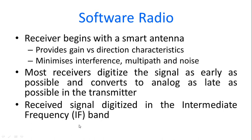If it is going to be a receiver it begins with a smart antenna; if it is going to be a transmitter, the smart antenna is at the final stage. The smart antenna provides various gain versus direction characteristics. We can control the gain and the directional characteristics through software. It minimizes interference, multipath, and noise. Most of the receivers digitize the signal as early as possible — it will be converted from analog to digital at the early stage itself so that it can be controlled in the software. The received signal is digitized — converted from analog to digital — at the intermediate frequency band. The IF band is used.